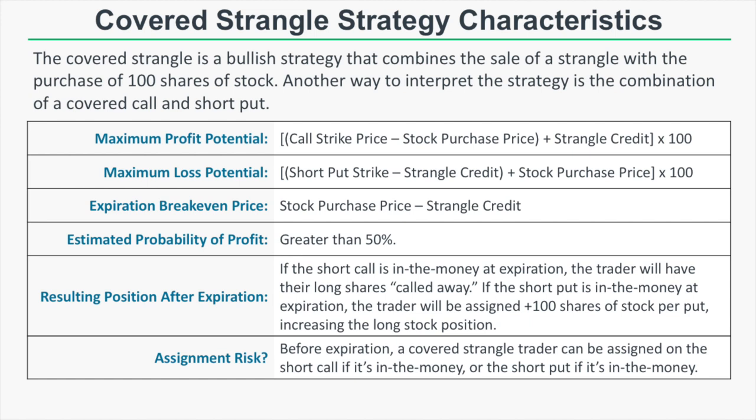To calculate the maximum profit potential on a covered strangle, you take the call strike price, subtract the stock purchase price, and add the strangle credit, then multiply by 100. That gives us the maximum profit on our shares — the difference between the short call strike and the stock purchase price — plus the max profit of the strangle times 100.